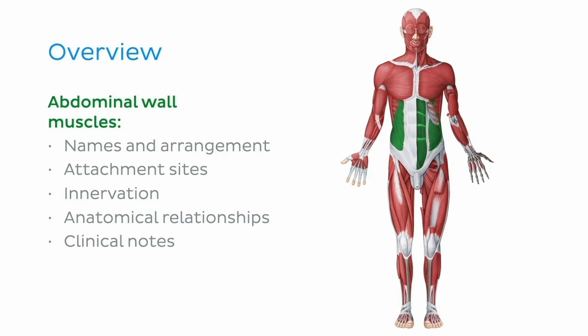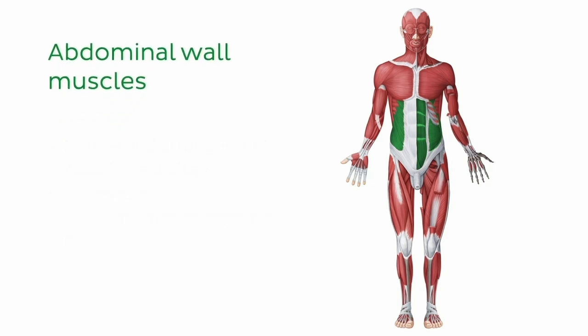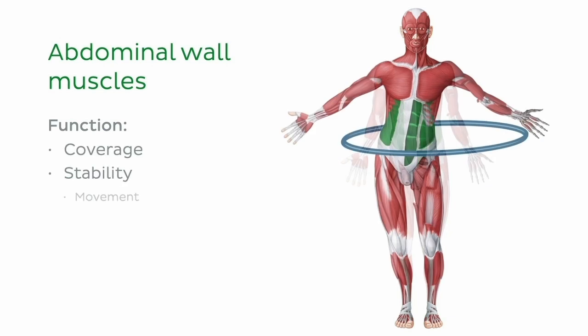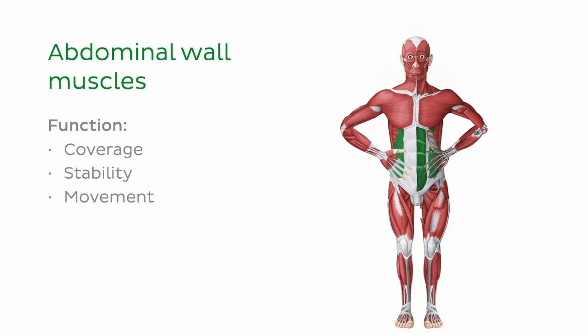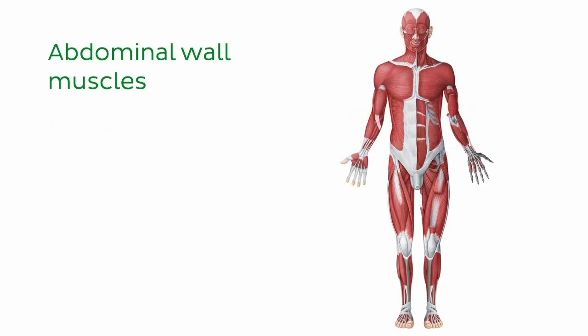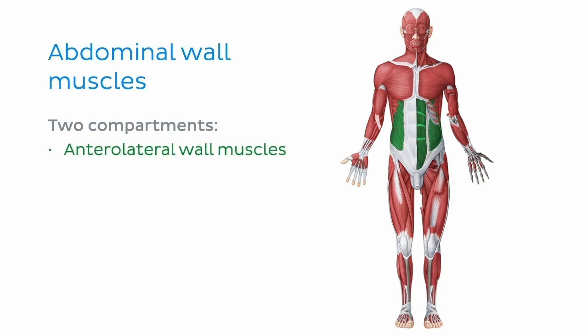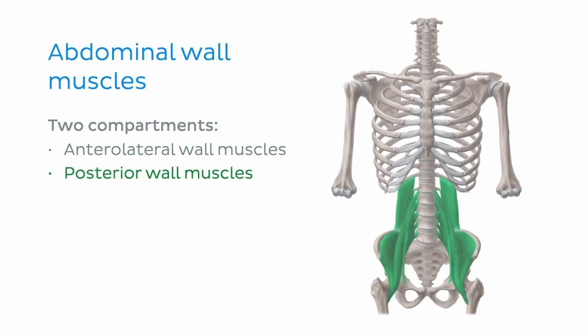Before we set off, let's briefly discuss some overarching details that will help carve out our understanding of the muscles of the abdominal wall. Functionally, the muscles of the abdominal wall provide coverage, stability, and flexible movement to the abdominal cavity, whilst also protecting the abdominal viscera from injury. Furthermore, according to their location, these muscles can be divided into two compartments: the anterolateral and the posterior wall muscles.